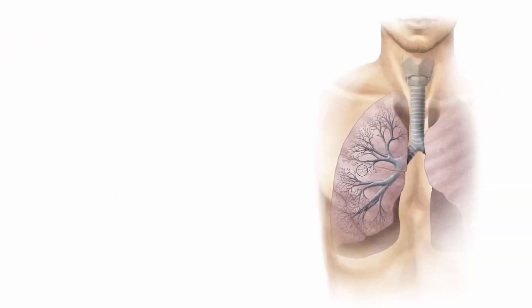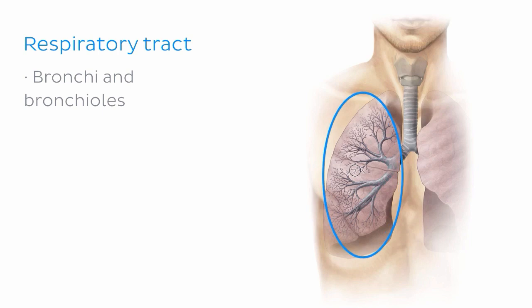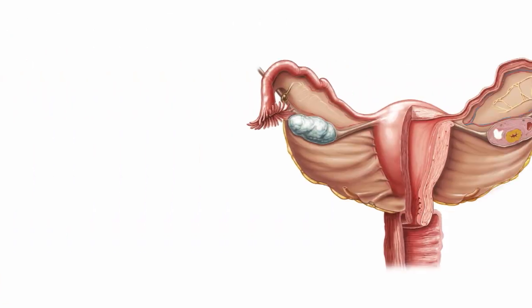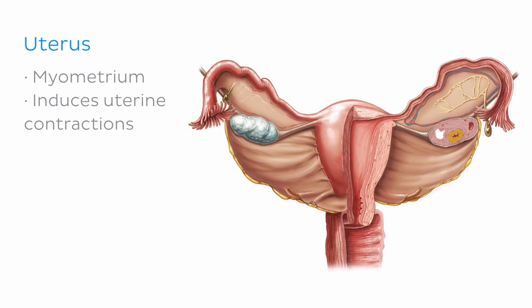In addition, we can also find smooth muscle in the respiratory tract, specifically in the bronchi and the bronchioles, which are these structures just here. Here smooth muscle helps to regulate airflow into the lungs. We can also find smooth muscle tissue in the uterus, specifically in the inner layer of the uterine wall known as the myometrium. Here smooth muscle functions to induce uterine contractions, for example during menstruation or labor.